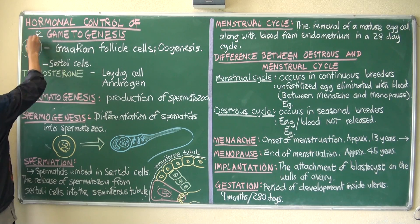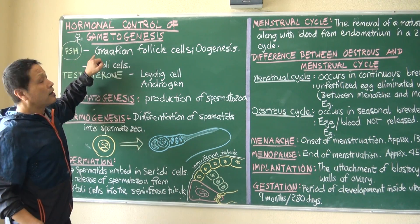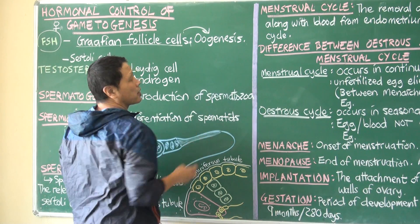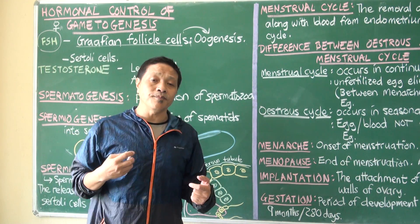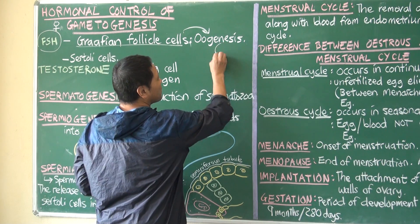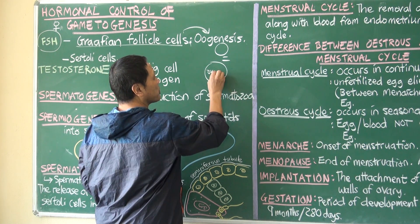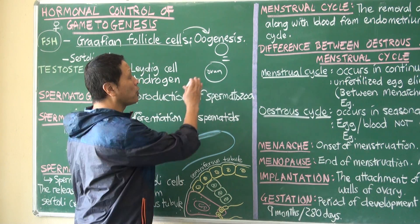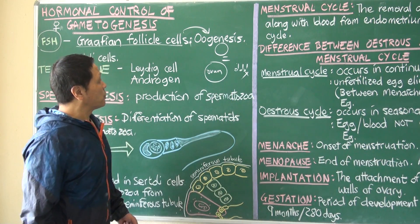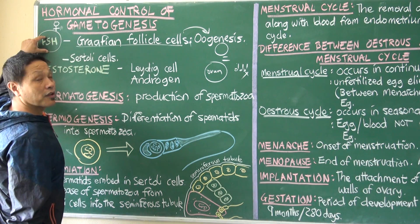FSH is often referred to as the female hormone. This FSH activates the Graafian follicle cells inside the ovary for oogenesis. Oogenesis is the production of a mature ovum or egg cell. One primary egg cell undergoes two sets of divisions and finally forms one large ovum with half the number of chromosomes, and three polar bodies, which are eliminated from the body. This process is initiated by the Follicle Stimulating Hormone.